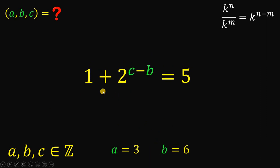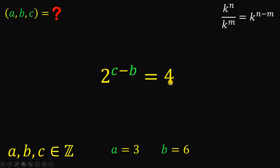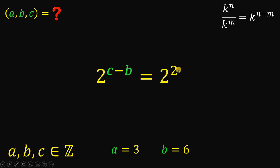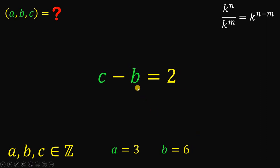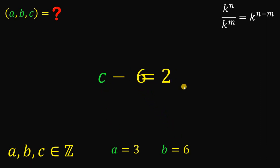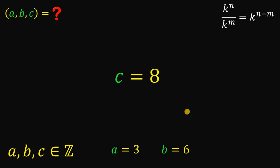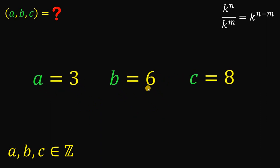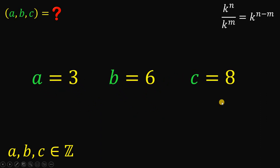Now, how about the value of C? Using the equation 1 plus 2 raised to C minus B equals 5, let's subtract 1 on both sides. This gives us 2 raised to C minus B equals 4, and 4 can be written as 2 raised to 2, so C minus B must equal 2. Since B equals 6, we get C equals 2 plus 6, which is equal to 8.